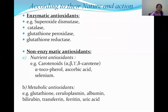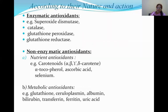Non-enzymatic antioxidants include carotenoids, alpha-tocopherol, ascorbic acid, and selenium — these are also called nutrient antioxidants. The carotenoids include alpha, beta, gamma, and delta forms. Alpha-tocopherol, ascorbic acid, and selenium are also examples of nutrient antioxidants.